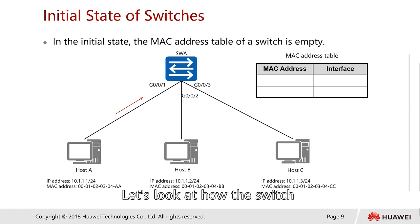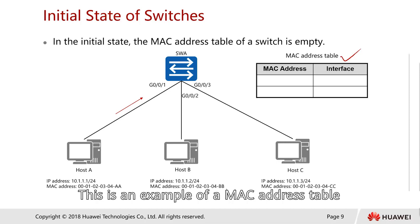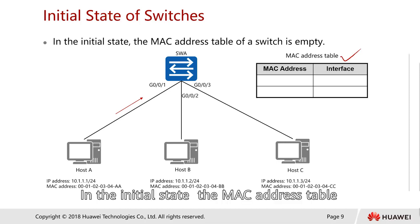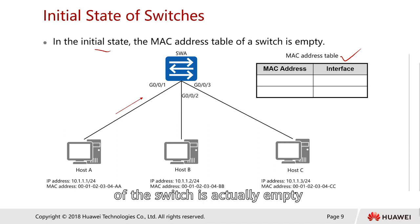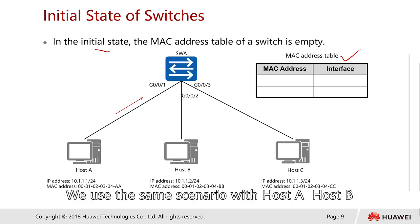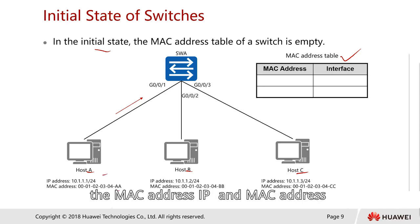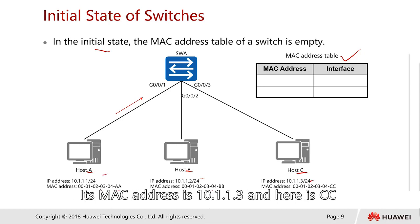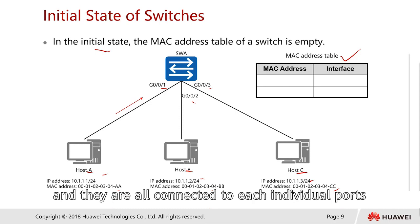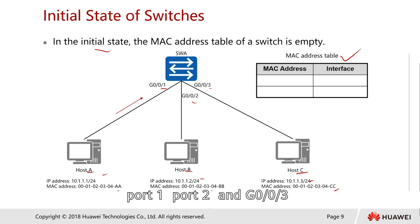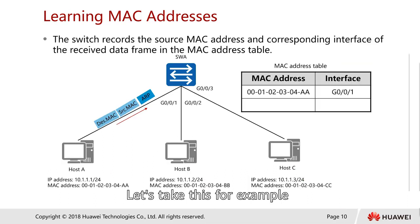Let's look at how a switch generates the MAC address table. During the initial state, the MAC address table of the switch is empty. We have hosts A, B, and C, each with individual IP and MAC addresses — for example, 10.1.1.3 with MAC address CC — connected to individual ports: port 1, port 2, and G0/0/3. When the first packet arrives — for example, host A sends an ARP request to look for host C —